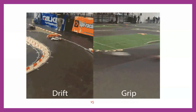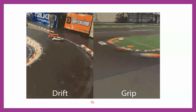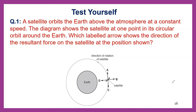The drivers use the centripetal force technique while drifting their cars intentionally over streets. Now we can practice some questions. A satellite orbits the Earth above the atmosphere at a constant speed. The diagram shows the satellite at one point in its circular orbit around the Earth. Which labeled arrow shows the direction of the resultant force on the satellite? We have four options: A, B, C, and D. The force of gravity of the Earth pulls the satellite toward its center due to centripetal force, so the answer is D.